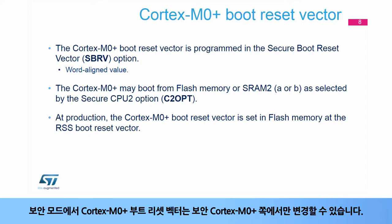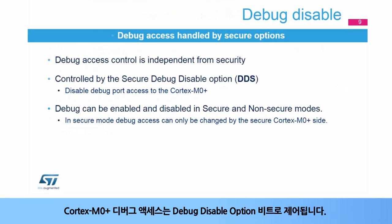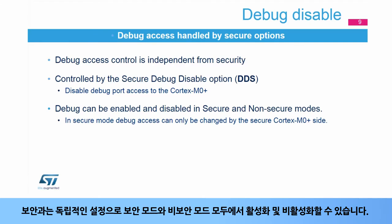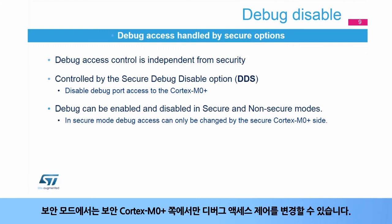In Secure Mode, the Cortex-M0 Plus Boot Reset Factor can only be changed by the Secure Cortex-M0 Plus side. Cortex-M0 Plus Debug Access is controlled by the Debug Disable option bit. It is independent from security and can be enabled and disabled in both Secure and Non-Secure modes. In Secure Mode, Debug Access Control can only be changed by the Secure Cortex-M0 Plus side.